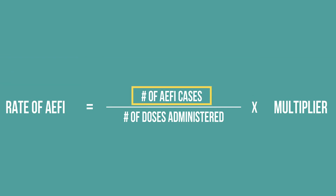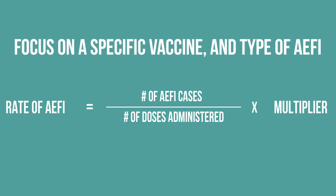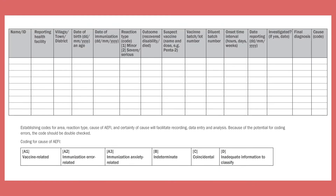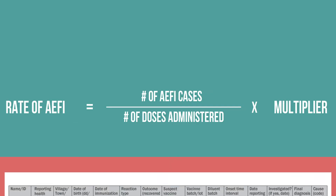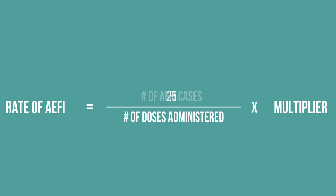This number should focus on a specific vaccine antigen. If the vaccine is administered more than once, focus on the dose in the series, such as the number of AEFI cases who received the first dose of MMR. You can find this information using an AEFI line list. In our example, there were 25 reports of febrile seizures following the first dose of MMR vaccination.